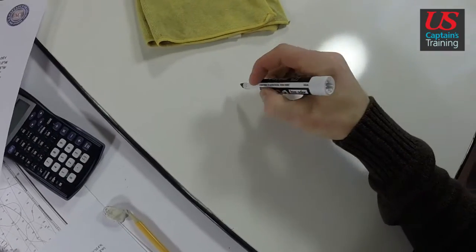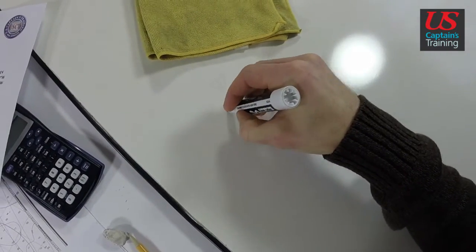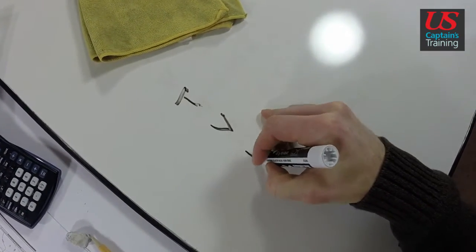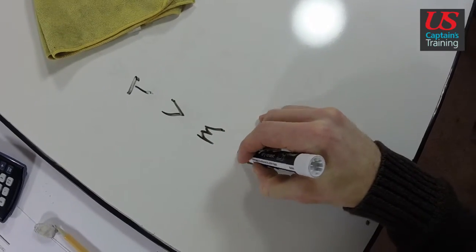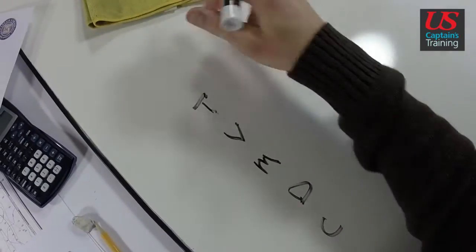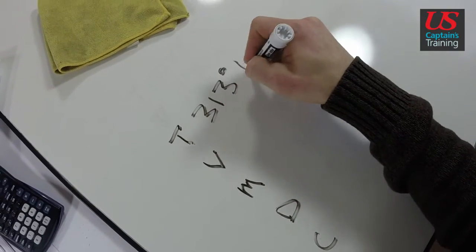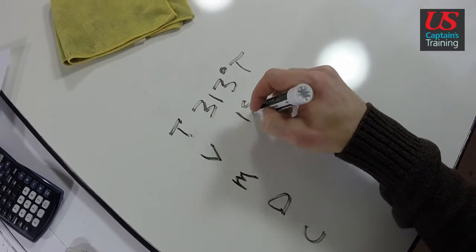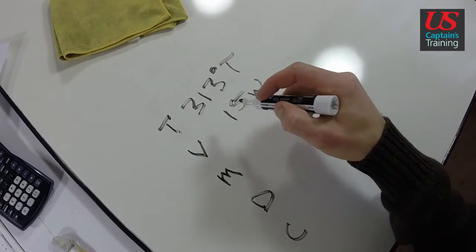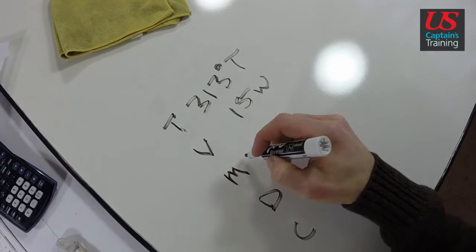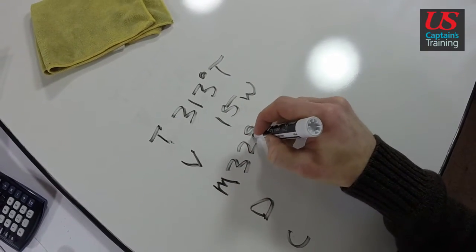This is 313 true. So I'm looking at T, V, M, D, C. Now 313 degrees true. Variation, we're always going to use 15 west on this chart. 328, 328, 328.